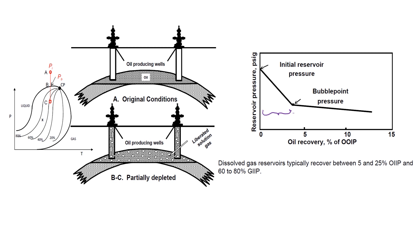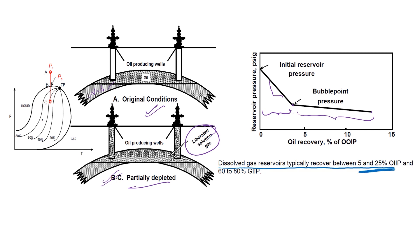Above bubble point (under-saturated condition), reservoir pressure declines very rapidly. Once pressure goes below bubble point, the slope of pressure decline is comparatively less. The initial condition shows oil with some water beneath the reservoir; in partially depleted condition, liberated solution gas bubbles appear; and if enough gas is liberated, a free gas zone may also develop.